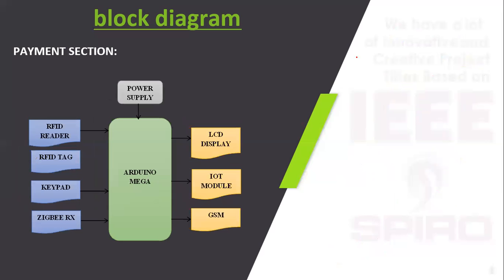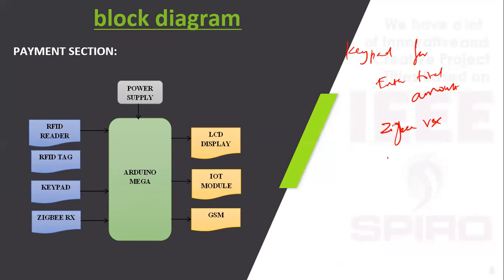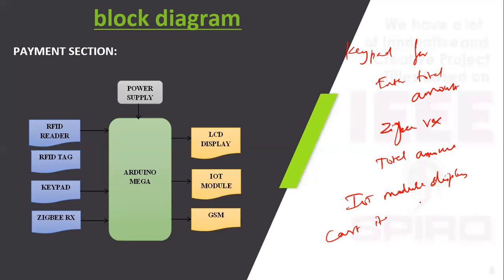In the payment section, we are using a keypad for entering the total amount. A Zigbee receiver is used to receive the total amount. An IoT module displays each cart's items, and an LCD is used as output. GSM sends a confirmation of payment.